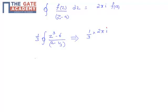That is (z^3 - 6) at a equal to 1/3, divided by... times 2πi.